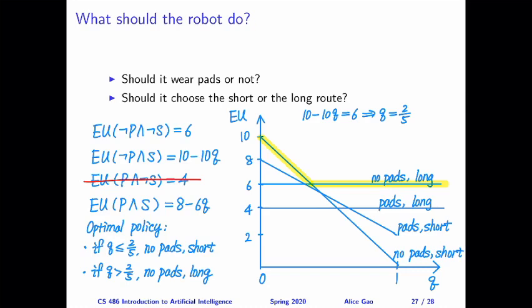That's everything for this video. After watching, you should be able to calculate the expected utility of an agent given a set of decisions, and given the expected utilities for each set of decisions, determine an optimal policy. Thank you very much for watching — see you in the next video. Bye for now.